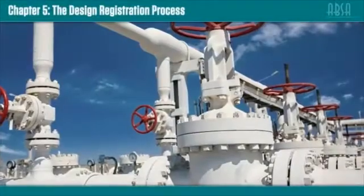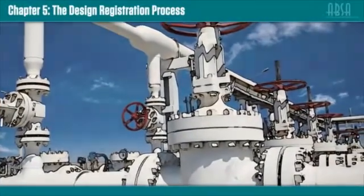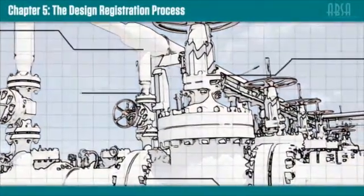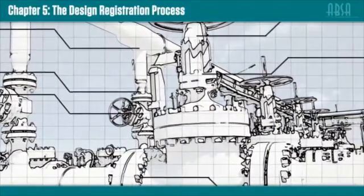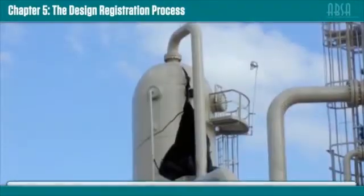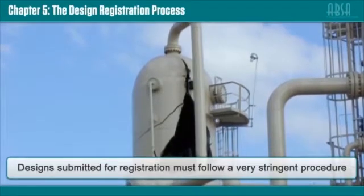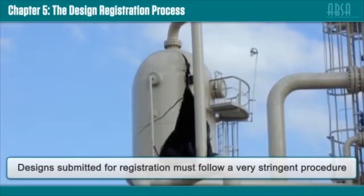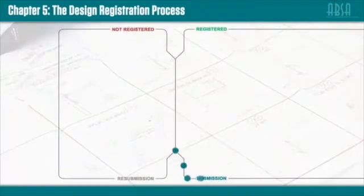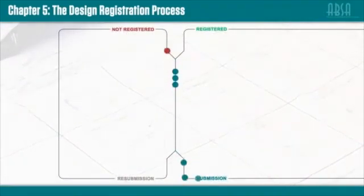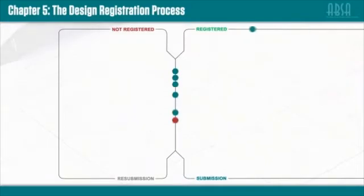Chapter 5: The Design Registration Process. Due to the nature of pressure equipment and the significant dangers of a failure, designs submitted for registration must follow a very stringent procedure. Designs that are not submitted in accordance with this procedure will not be registered and will require resubmission, pushing the application to the back of the queue.